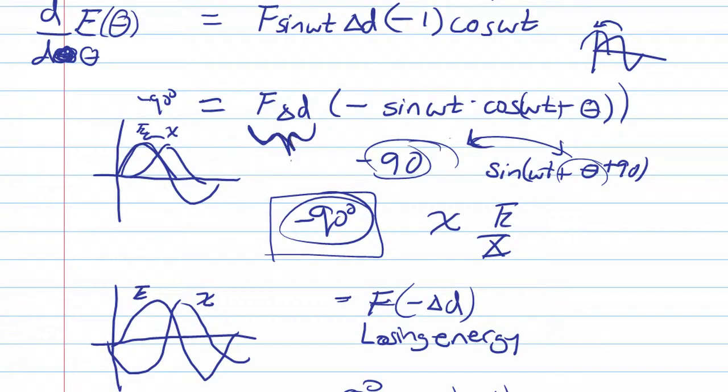And the reason it increases is because we are most effectively doing work when the phase between velocity and the forcing is zero degrees. Or the phase between the displacement or the strain is negative 90.